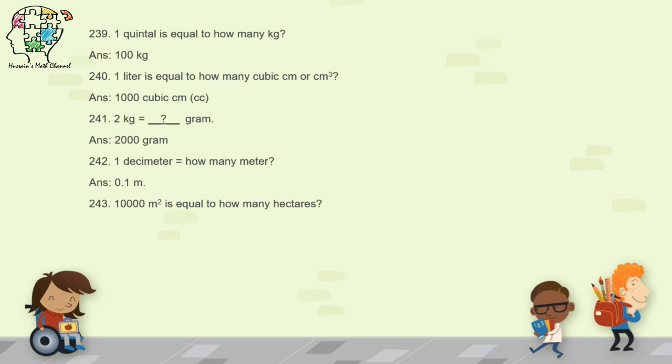Question 243: 10,000 square meters is equal to how many hectares? 10,000 square meters equals 1 hectare.